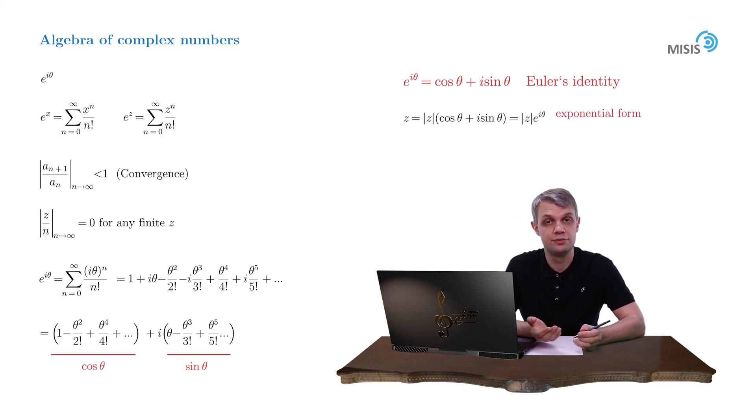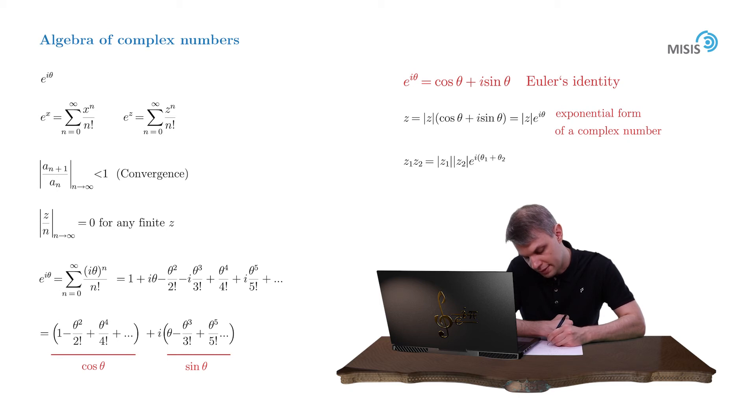This way the multiplication and division of complex numbers becomes an almost trivial operation. Like z1 times z2 is turned into the modulus of z1 times modulus of z2 times e to i theta 1 plus theta 2. The same goes for the division.